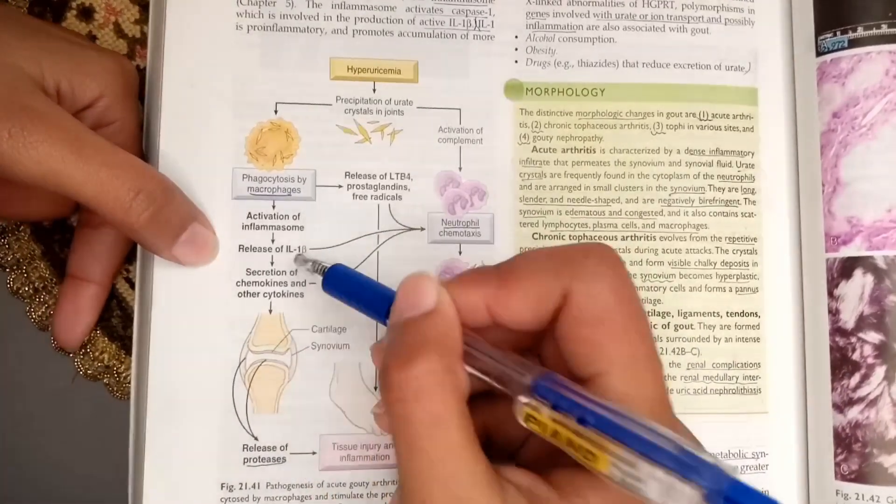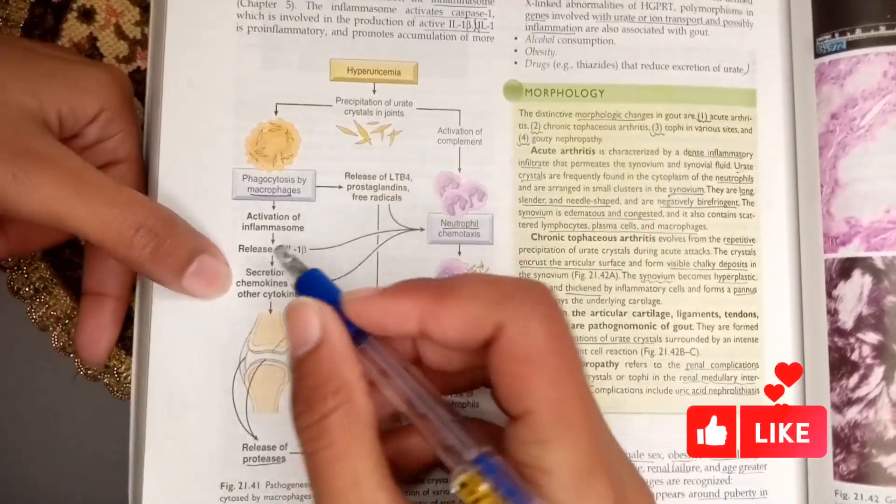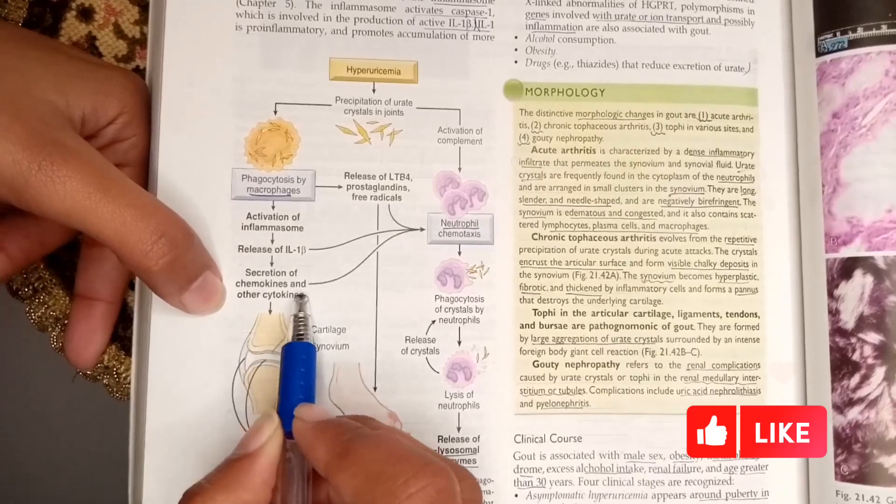This causes the release of interleukin-1, which is the major pro-inflammatory cytokine. This in turn increases the secretion of chemokines and cytokines from various cells.